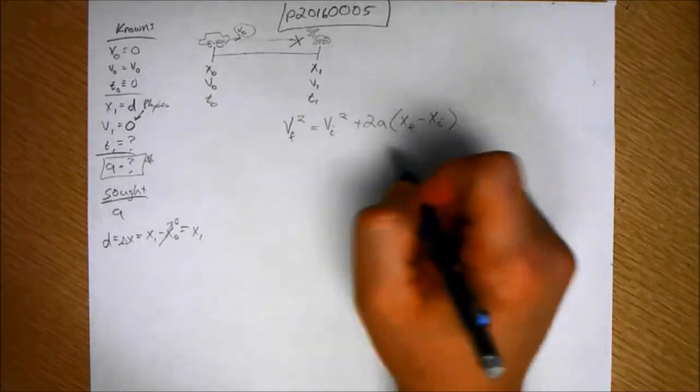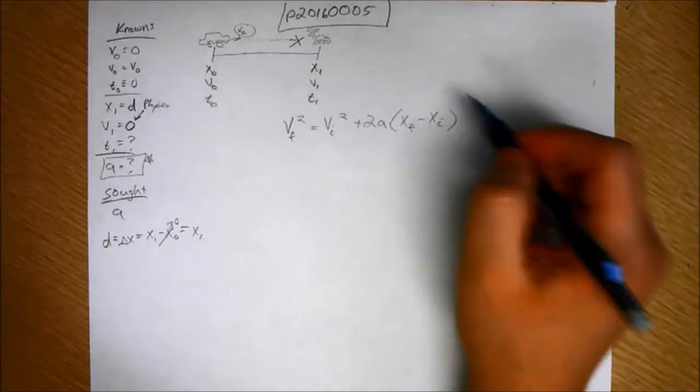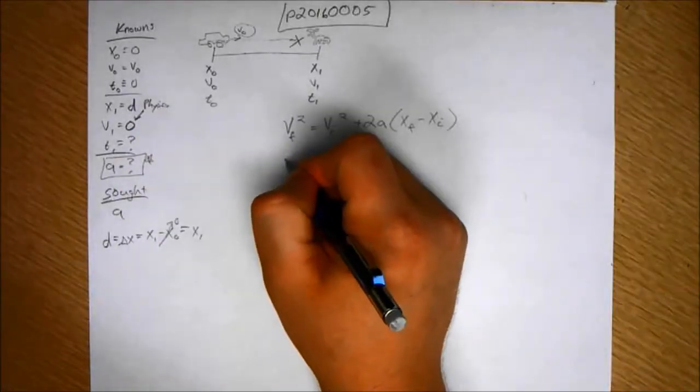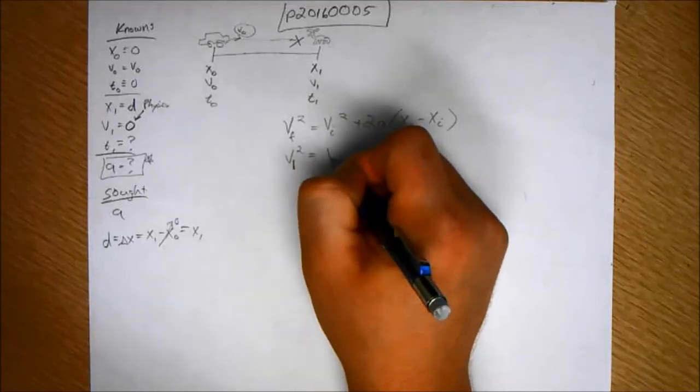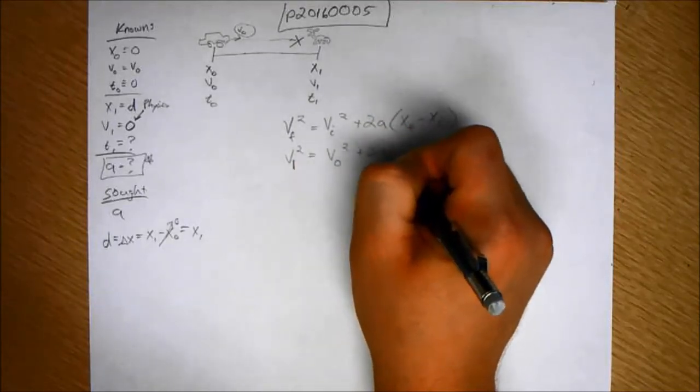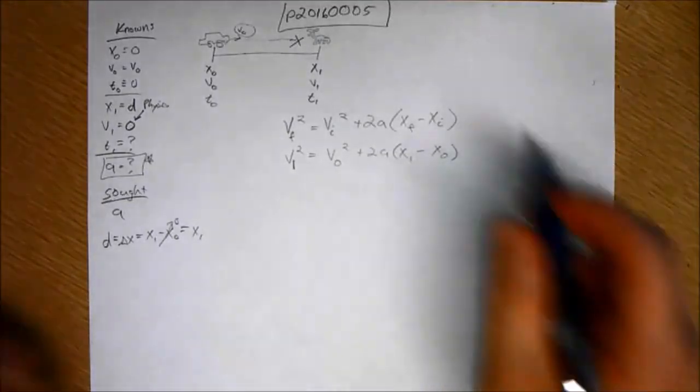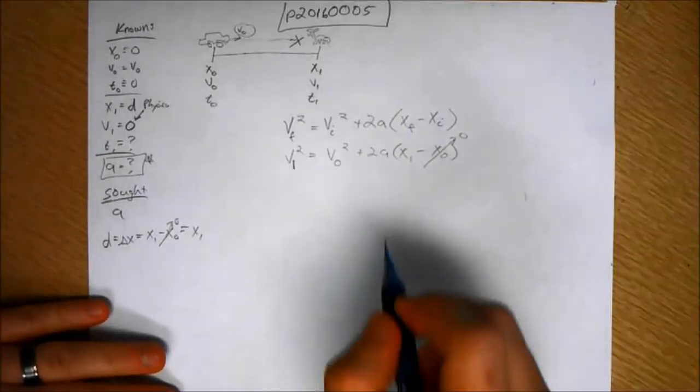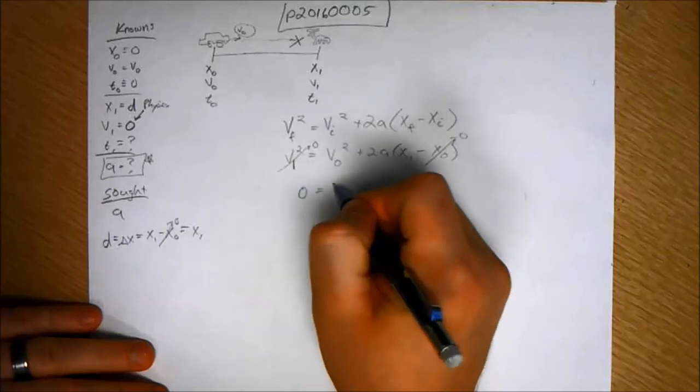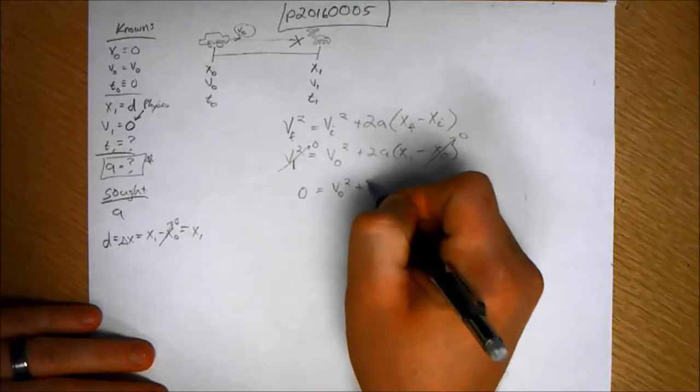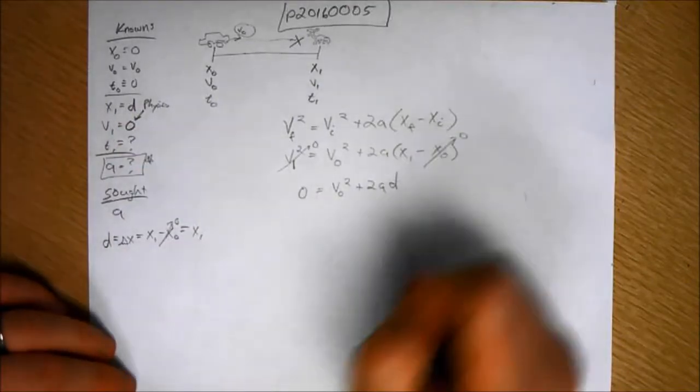Okay, so what can we zero out? V-naught, well, let's put it in terms of our situation here. V-one equals V-zero squared plus 2A, X-one minus X-zero. X-zero equals zero. V-one equals zero. So zero equals V-naught squared plus 2A, X-one, but I'm going to call X-one D. Let's put it in terms of the given quantities.